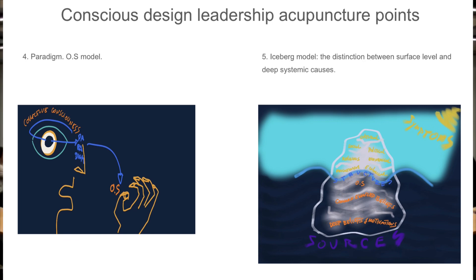An iceberg usually has maybe five percent that we can see, and ninety-five percent that is not visible, but it is what gives the strength and the motivation. So it is the structures that show and the sources from where they come from.